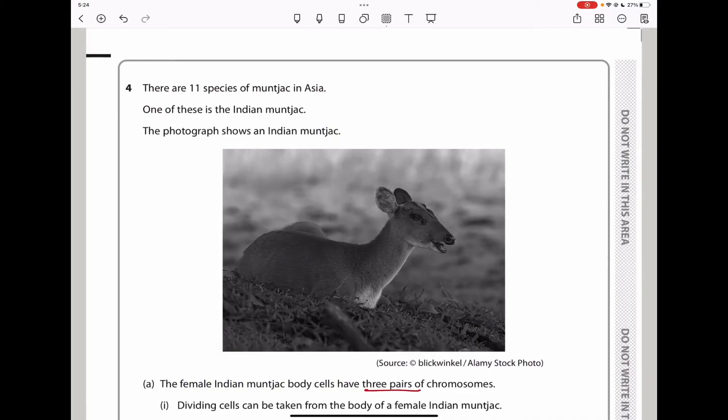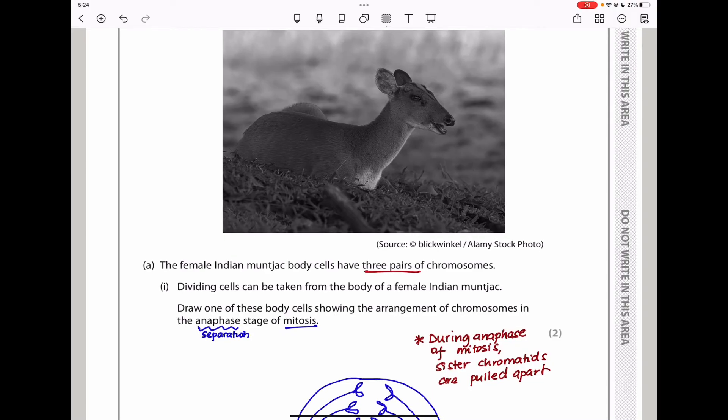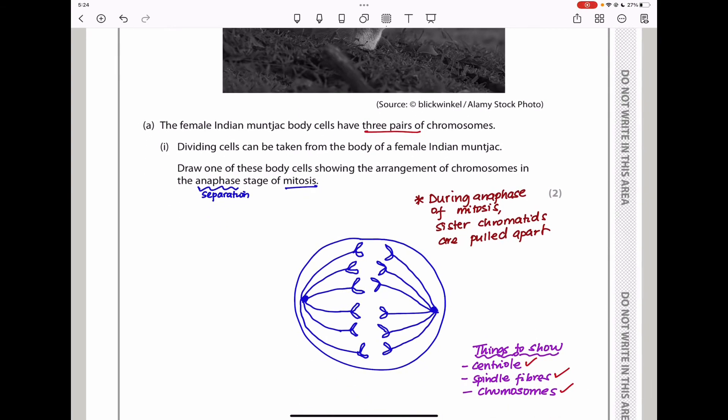Question 4: there are 11 species of muntjac in Asia. One is the Indian muntjac. The photograph shows an Indian muntjac. The female Indian muntjac's body cells have three pairs of chromosomes. Dividing cells can be taken from the body of a female Indian muntjac. Draw one of these cells showing the arrangement of chromosomes in the anaphase stage of mitosis. During anaphase of mitosis, sister chromatids will be pulled apart. Since we have three pairs of chromosomes, during interphase replication can occur to produce sister chromatids.